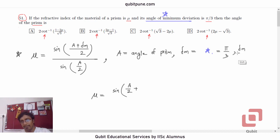So δₘ/2 will be π/6. π/6 upon sin of A/2.